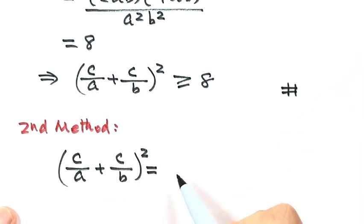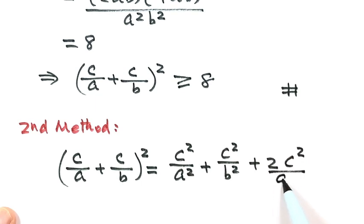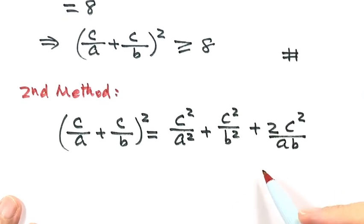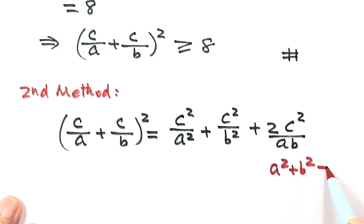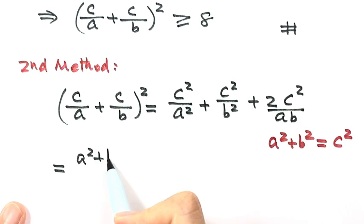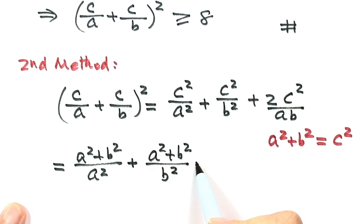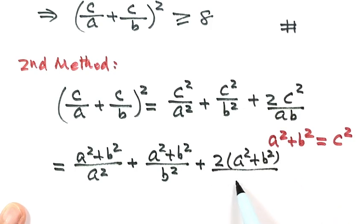First, let's expand this whole thing. So the first term squared, plus the second term squared, plus two times the first part times the second part, giving c²/(ab) for the cross term. Then use a² + b² = c² to replace all the c² terms. So we get (a² + b²)/a², plus (a² + b²)/b², plus 2(a² + b²)/(ab).